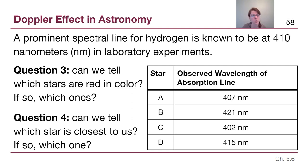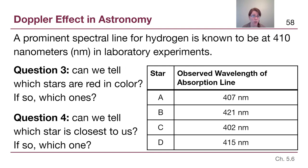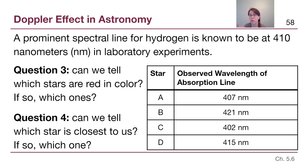Two more questions — same stars, same situation. For question three, Doppler shift does not change the overall color of these stars. Just because we're looking at a specific absorption line of hydrogen doesn't tell us anything about a star's temperature or color. So for question three, we do not know what color these stars are. It is not the case that the blue-shifted stars look blue. We want to make sure we don't get blue shift and red shift confused with actual color of stars.